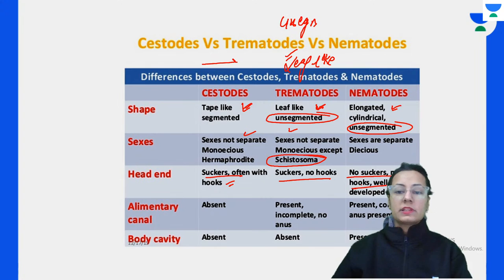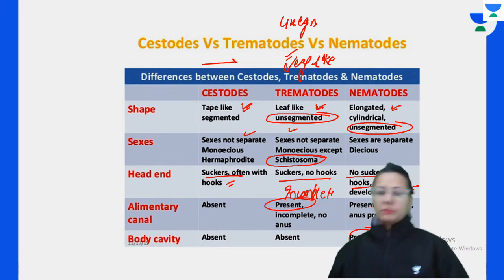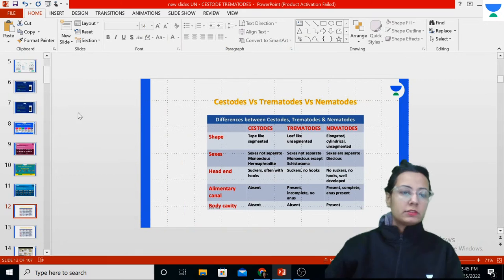The alimentary canal is present in trematodes but incomplete, while in nematodes it is present and complete. Body cavity is present in nematodes while it is absent in trematodes. Now we'll start with the nematodes - actually, we'll start with the trematodes.